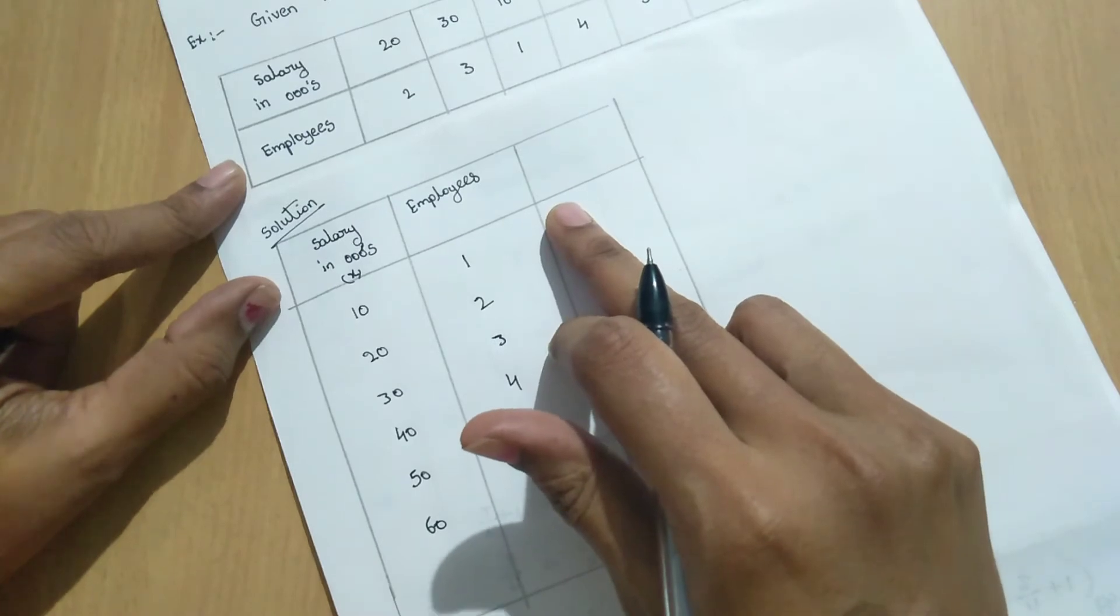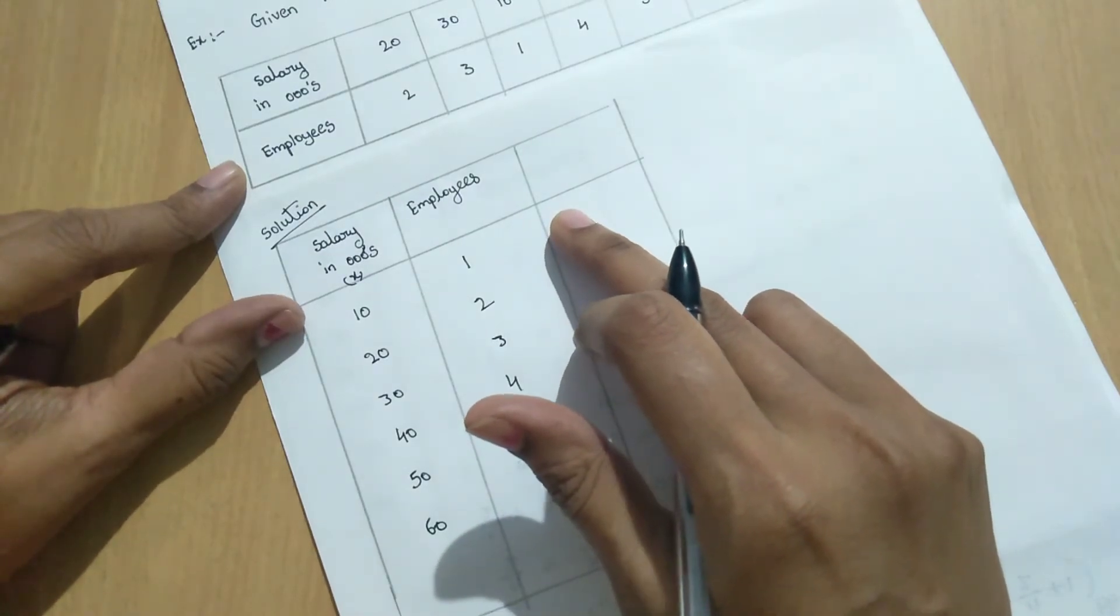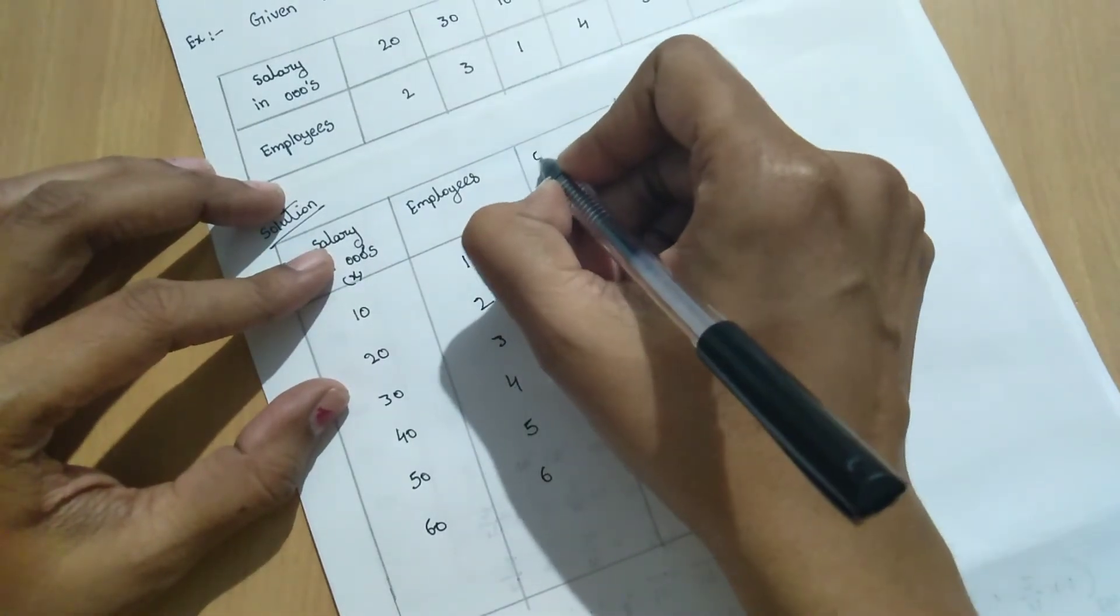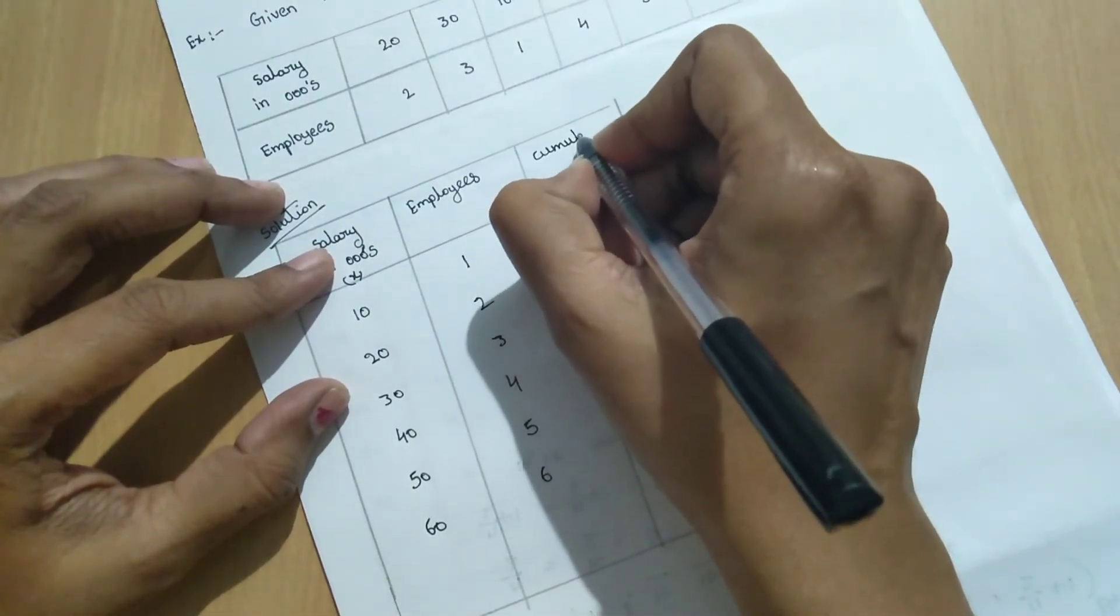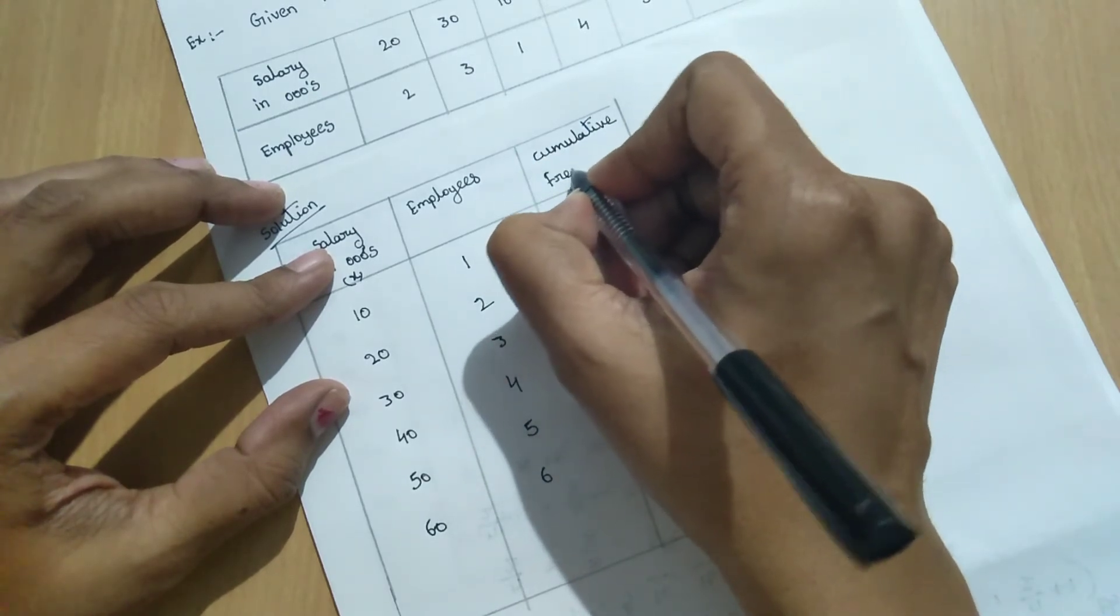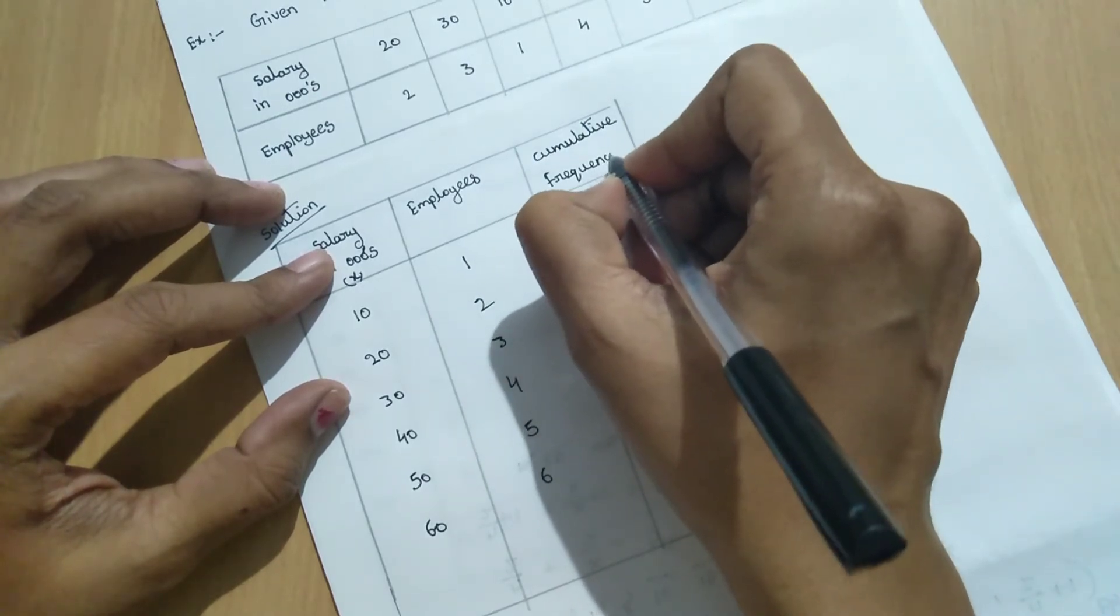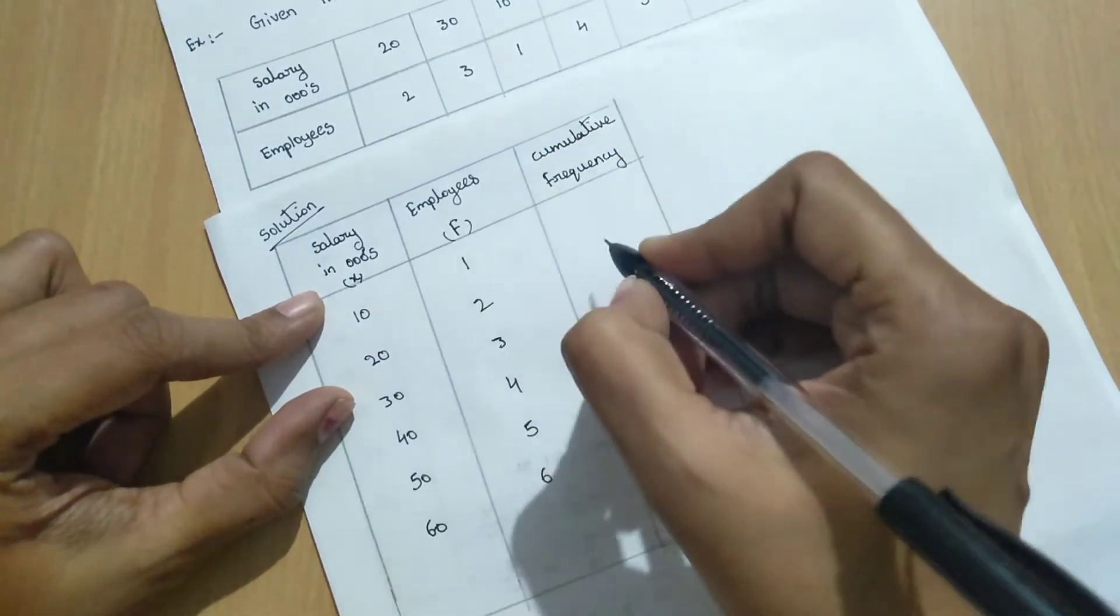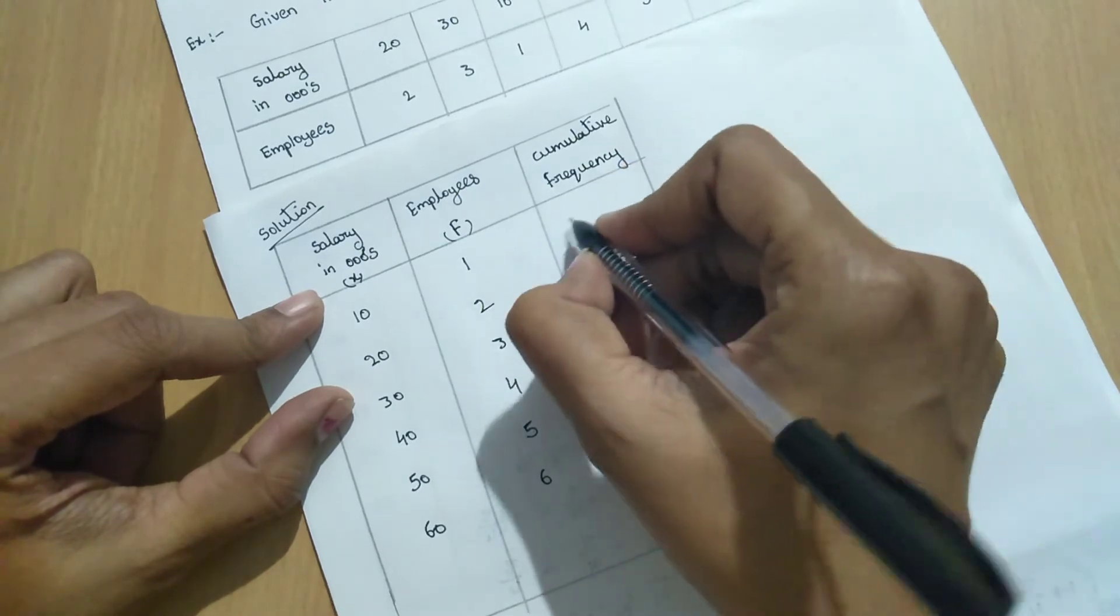Now we have to find out the cumulative frequency. So what is cumulative? Cumulative. Here these are the x values. Employees means frequency values. Here cumulative frequency.